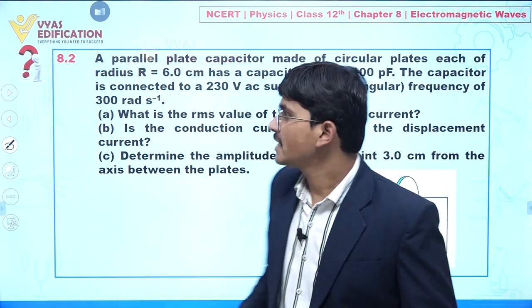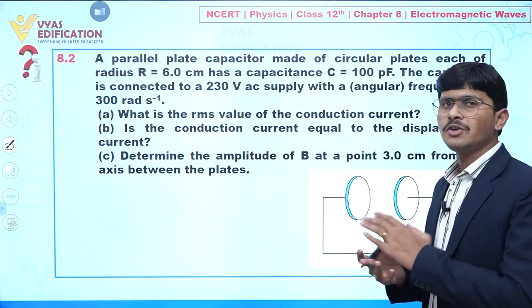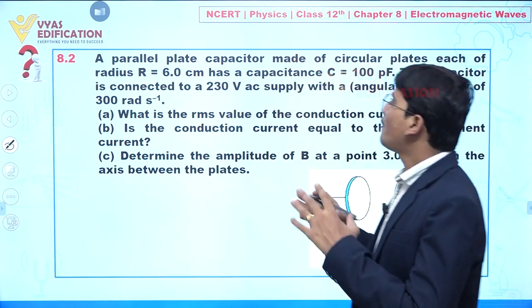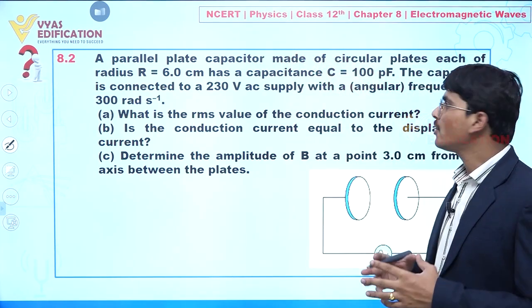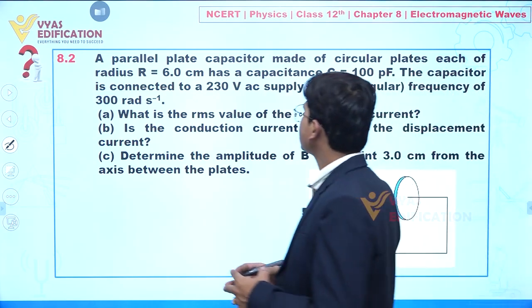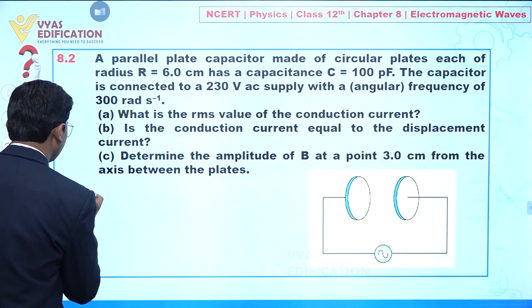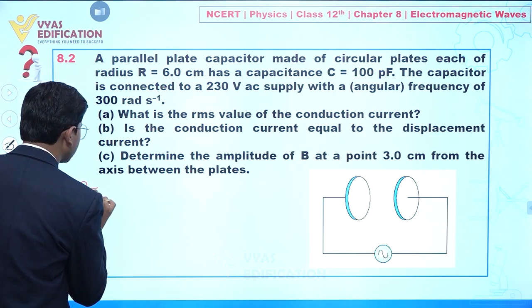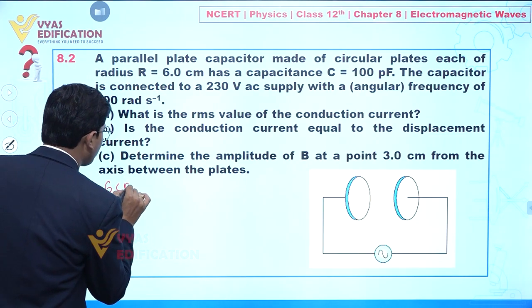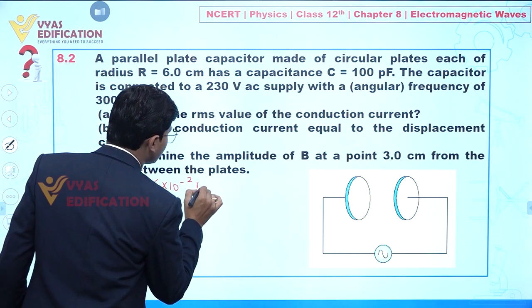Now, dear student, we are going to discuss question number 8.2. In this question, it is given a parallel plate capacitor made of circular plates, each of radius 6 centimeter. So we can write: radius of this circular plate is given as 6 centimeter, which is equal to 6 × 10⁻² meter.